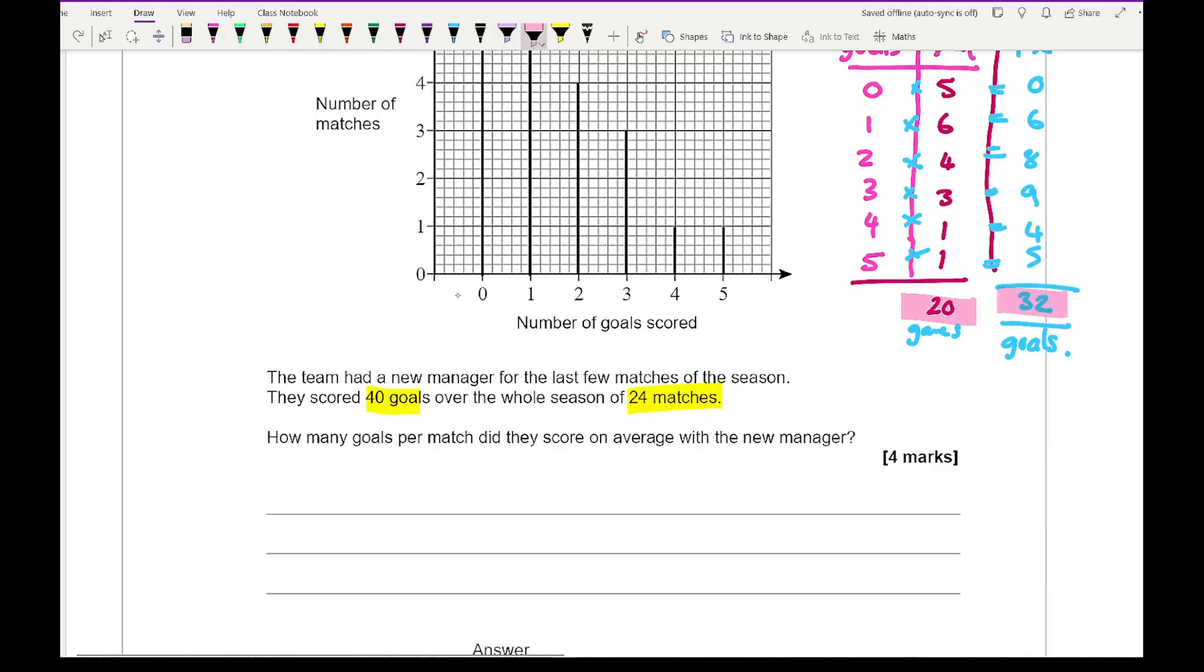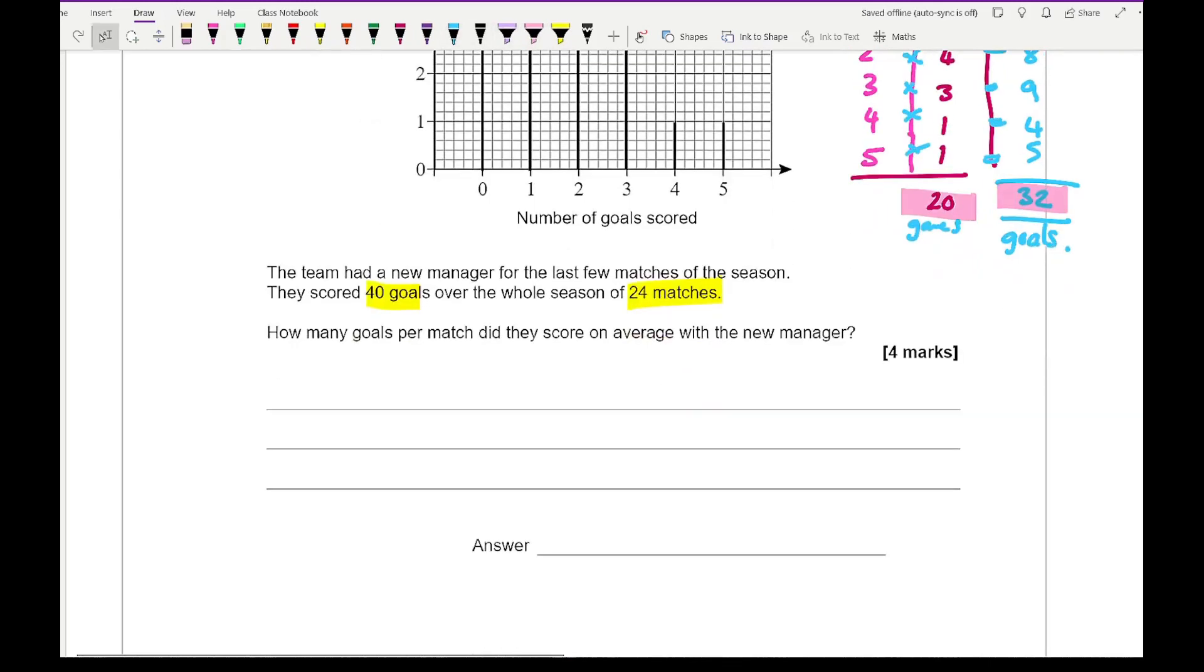Now we want to compare these numbers with the new manager. With the new manager they scored 40 minus 32, which is 8 goals, in 24 minus 20, which is 4 games. So the average is going to be 8 divided by 4, which equals 2 goals per match with the new manager.